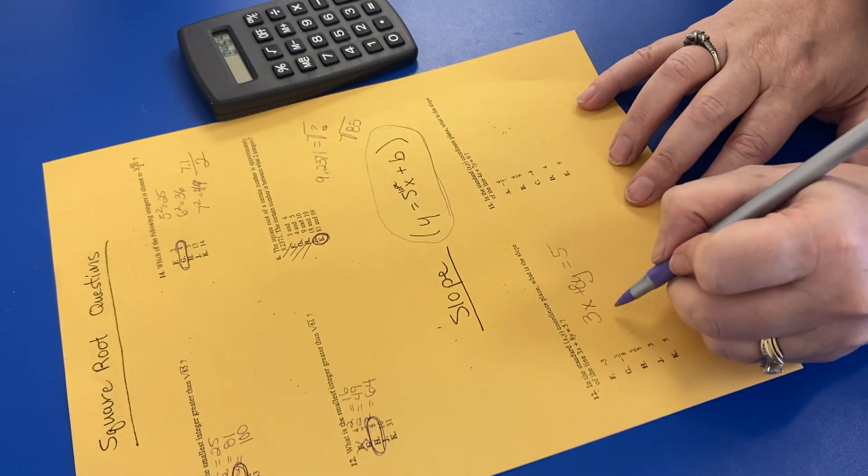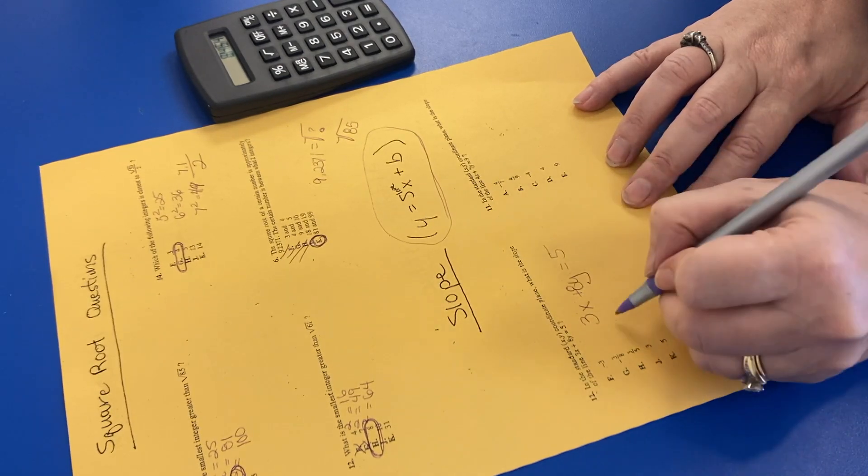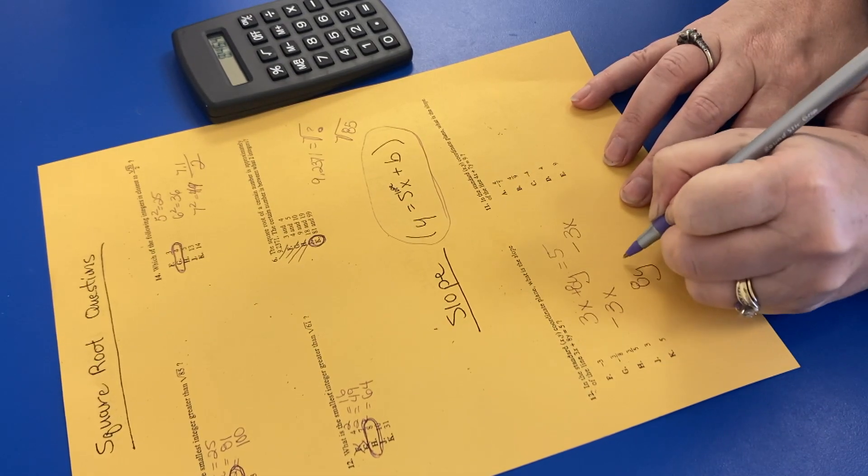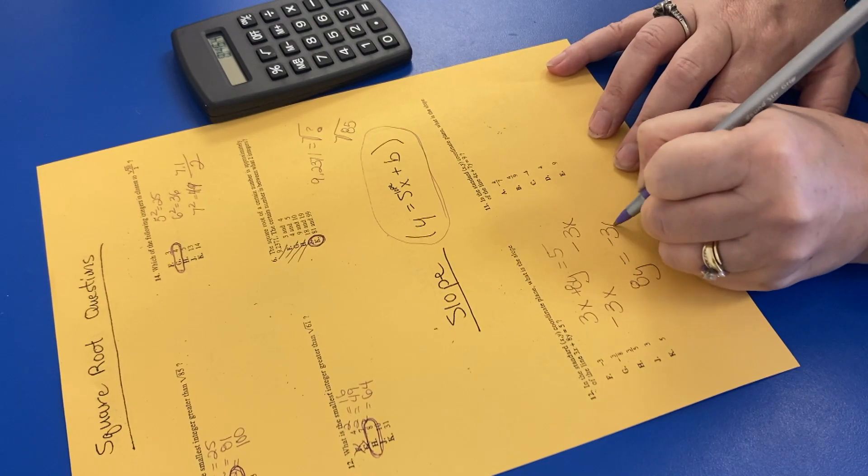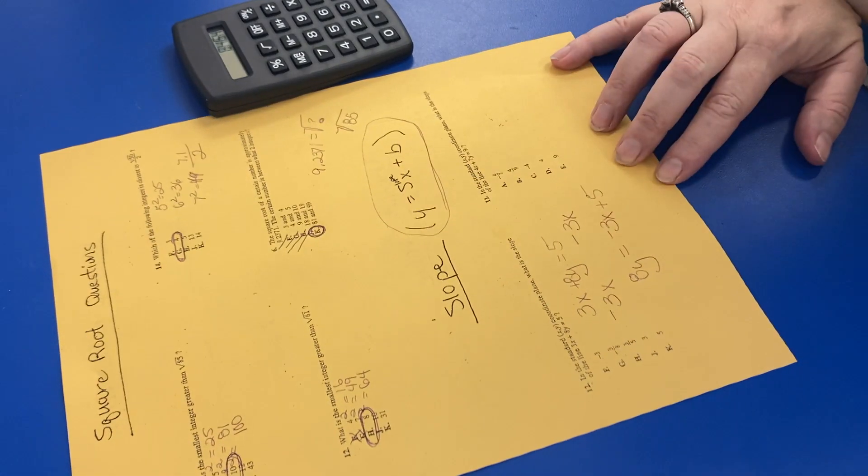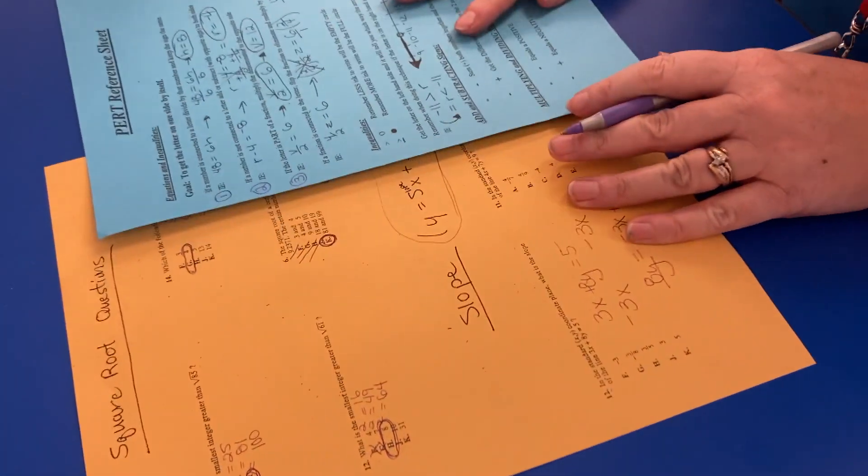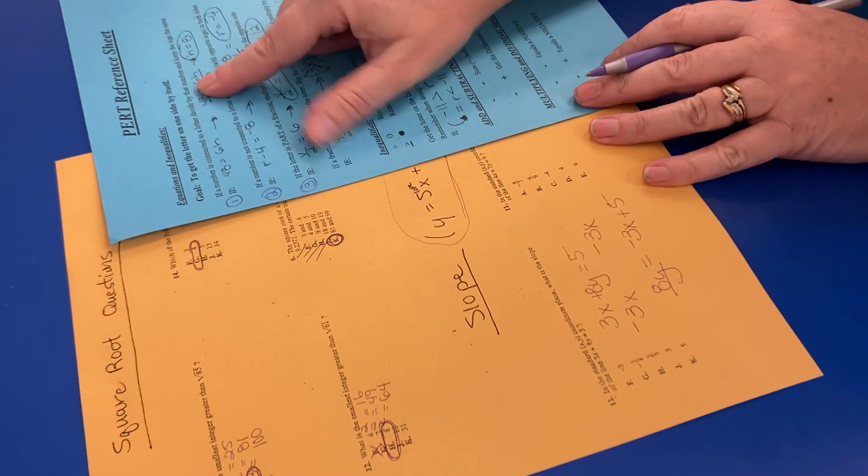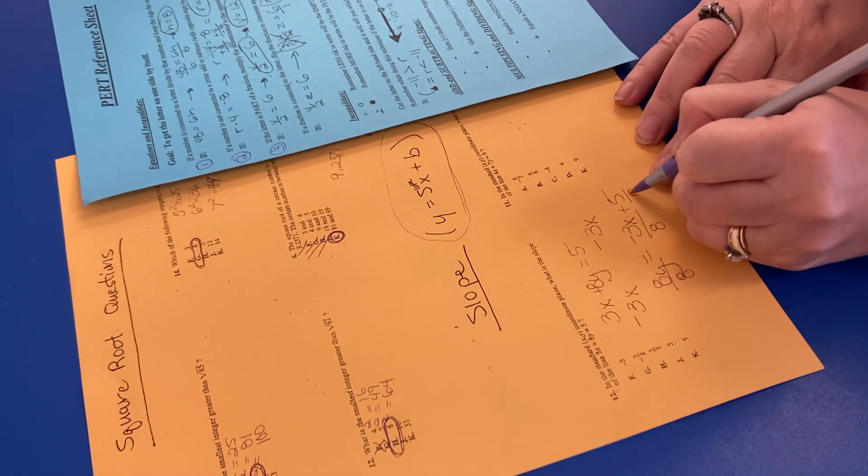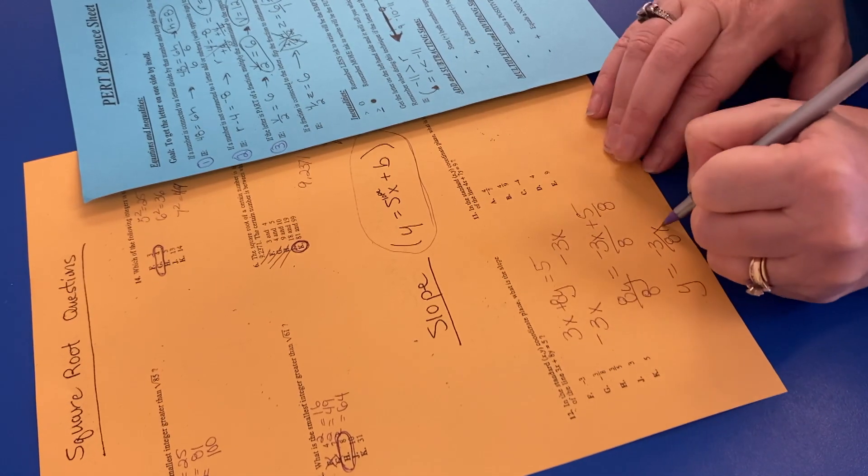So our job is to get the Y on one side by itself, right? So we're going to use our equations information or rules, and we're going to get this 3X on the other side. So we're going to go minus 3X. Okay, so now we got 8Y equals negative 3X plus 5. Okay, you see how we did that? Now, what we got to do is we got to get Y by itself. So what do we do? We do the rules. Remember, if a number is connected to a letter, divide by that number and keep the sign the same. So we're going to divide by 8, divide by 8, and divide by 8. So now Y equals negative 3 over 8X plus 5 over 8.